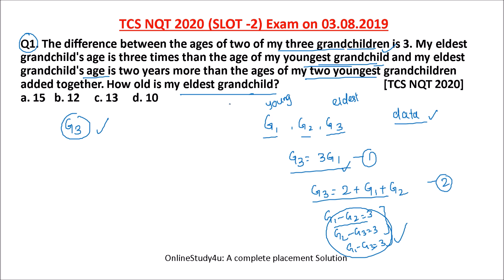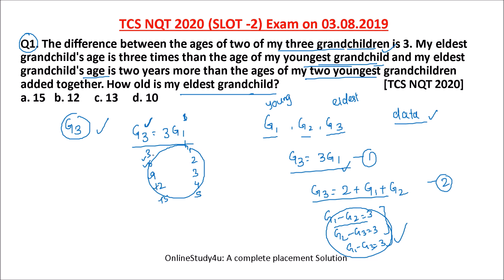In the exam, if you want to guess, you can eliminate some options first. The eldest grandchild is 3 times the youngest, so if G1 is 1 then G3 is 3; if G1 is 2 then G3 is 6; if 3 then 9; if 4 then 12; if 5 then 15. So the age of the eldest grandchild will always be a multiple of 3. That means 13 and 10 are not multiples of 3, so you can eliminate them and go 50-50.